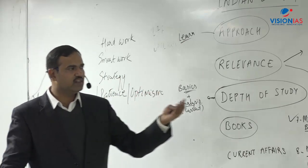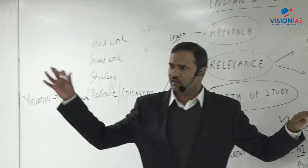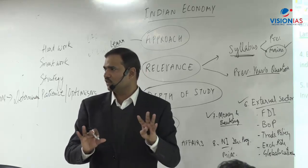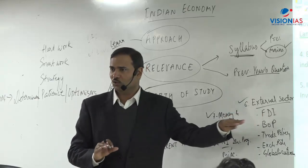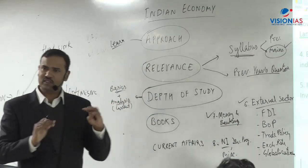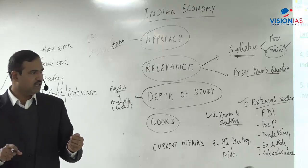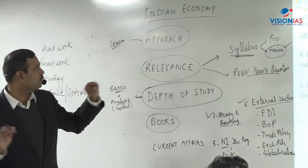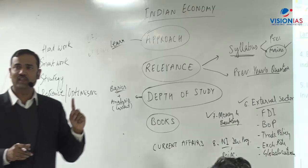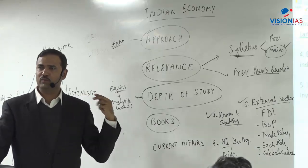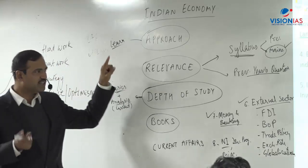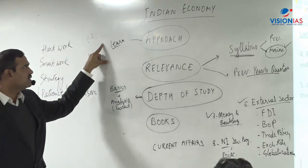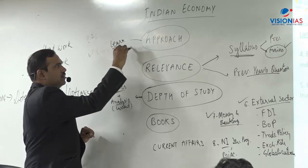For example, if you understand that FDI means a foreigner establishing a company with management control, and portfolio investment means a foreigner buying shares with no management role — that is learning. The second problem is retention: you may understand now but forget later. So you must retain everything. For that, revision is very important — at least 20 revisions. Make a synopsis of each lecture: from 7-10 pages of notes, reduce everything to one A4 page back to back of key points for quick revision.